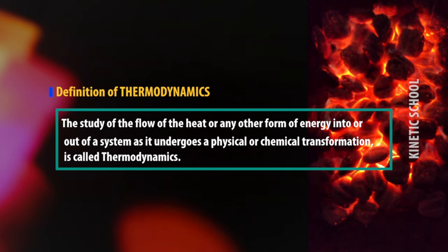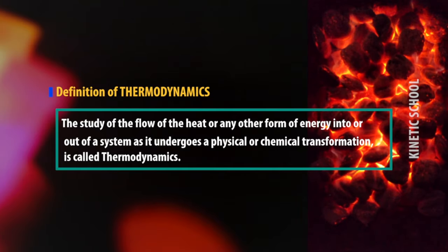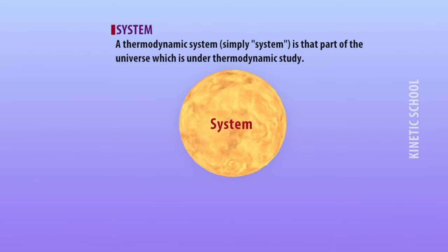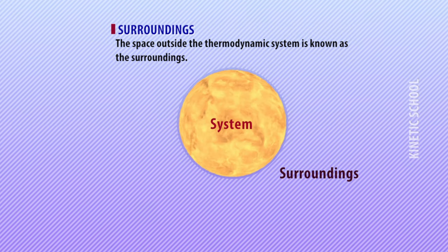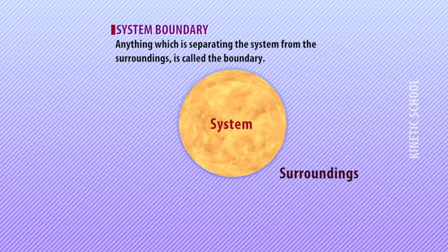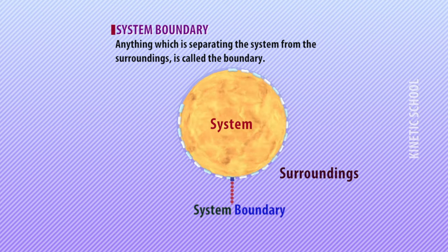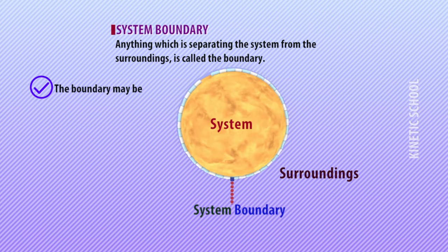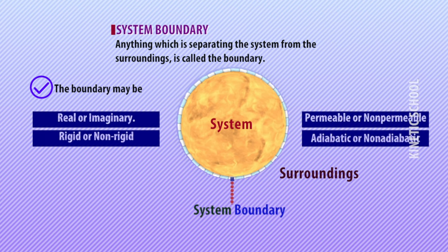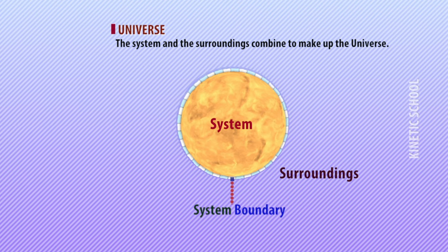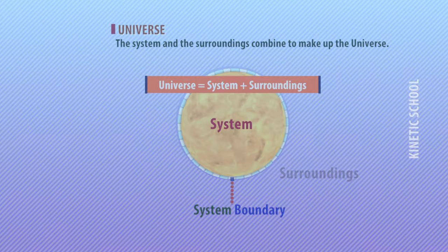A thermodynamic system is that part of the universe which is under thermodynamic study. The space outside the thermodynamic system is known as surroundings. Anything separating the system from the surroundings is called boundary. The boundary may be real or imaginary, rigid or non-rigid, permeable or non-permeable, or adiabatic or non-adiabatic. The system and the surroundings combined make up the universe.